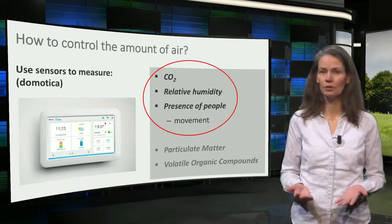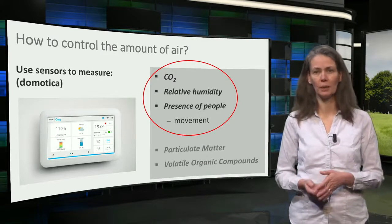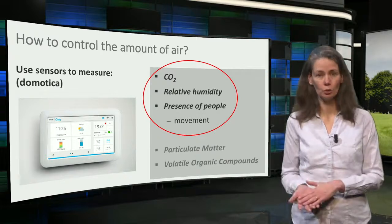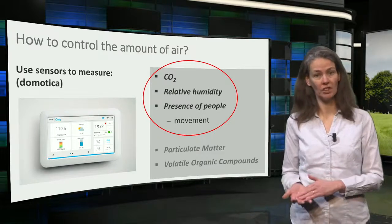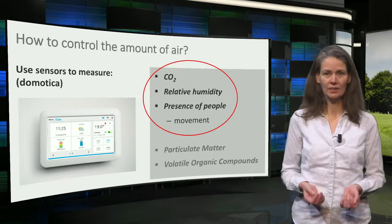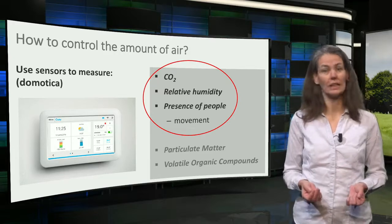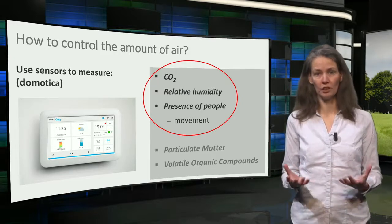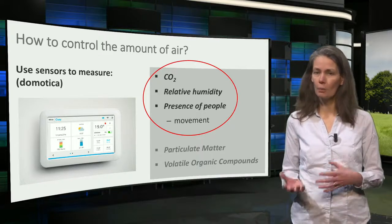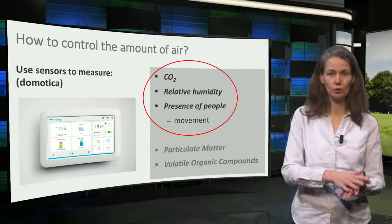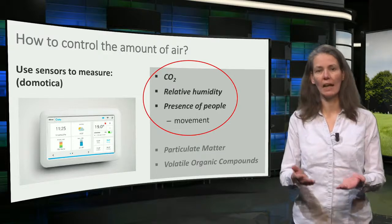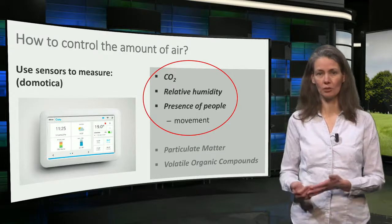At this moment, it is possible to measure the amount of people with movement sensors, for example, the CO2 related to indoor air quality, and the relative humidity. Measuring other gases and particulate matters is also possible, but more difficult and expensive. Coupling these sensors to the ventilation control systems ensures the right amount of ventilation at the lowest energy demand.